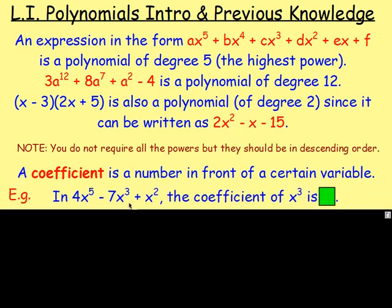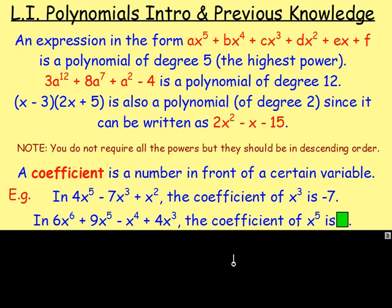So in this example here the coefficient of x cubed is negative 7. In this example what's the coefficient of x to the power of 5? You got it. It's 9. Well done.